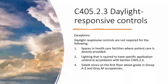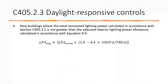Exceptions: daylight responsive controls are not required in healthcare facilities where patient care is directly provided, lighting that is required to have specific application controls per section 405.2.4, and side-lit zones on the first floor above grade for A2 or group M occupancies. Also excepted are new buildings where the total connected lighting power calculated in accordance with section 405.3.1 is not greater than the adjusted interior lighting power allowance calculated in accordance with Equation 4-9.